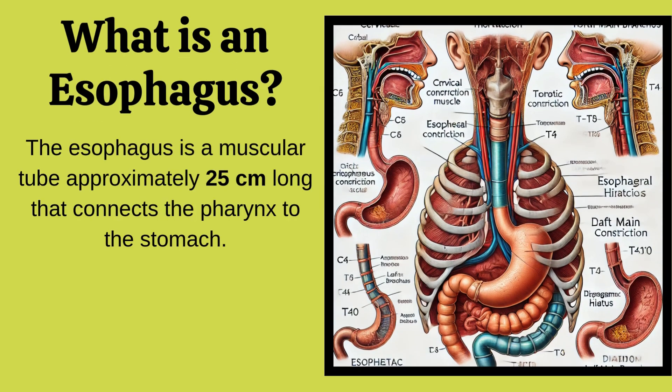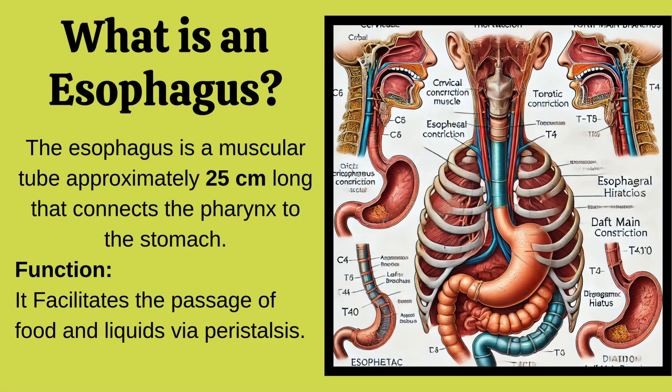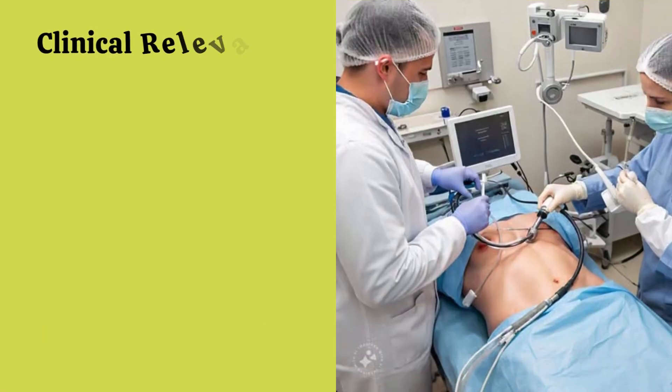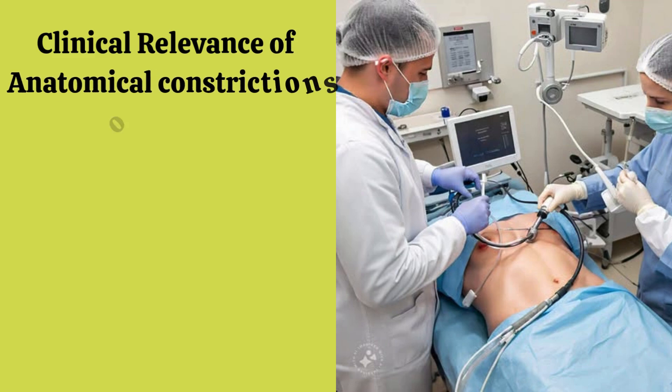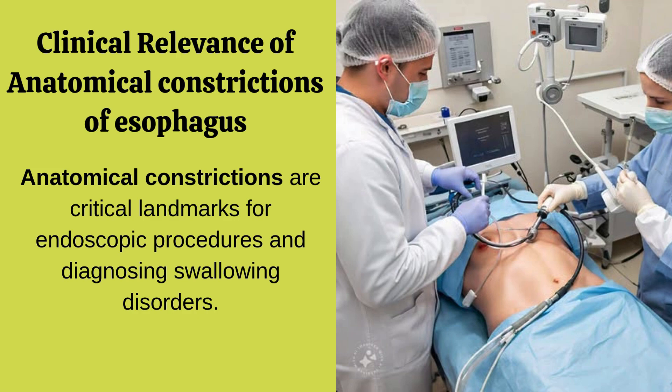What is an esophagus? The esophagus is a muscular tube, approximately 25 centimeters long, that connects the pharynx to the stomach. It facilitates the passage of food and liquids through peristalsis. Anatomical constrictions are critical landmarks for endoscopic procedures and diagnosing swallowing disorders.